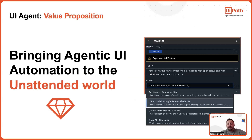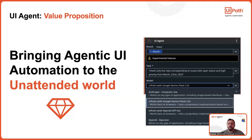We decided to launch agentic UiAutomation as an unattended-focused Studio activity first, called the UiAgent. This is because we truly believe that this is where the most immediate value for our customers lies. In unattended automation, robots are where automation can truly scale and deliver ROI at an enterprise level. So we wanted to unlock these high-impact use cases first.